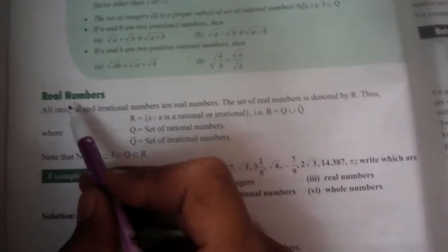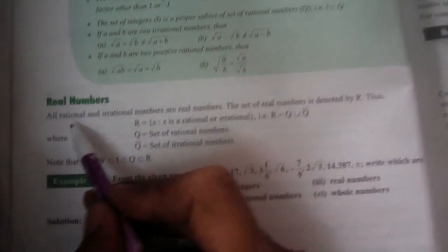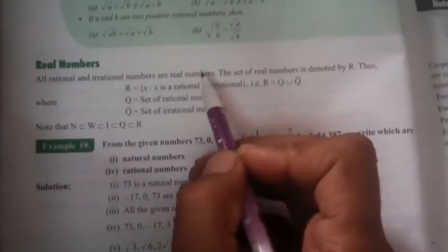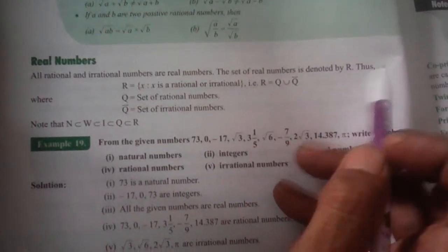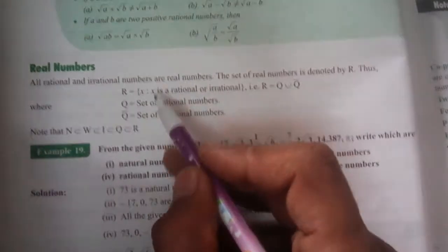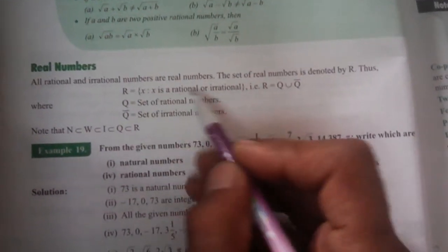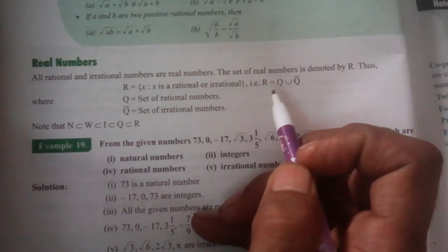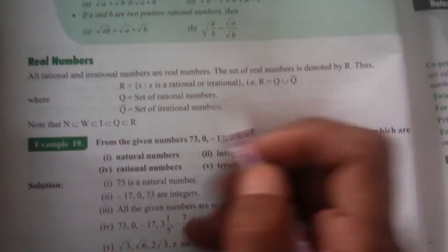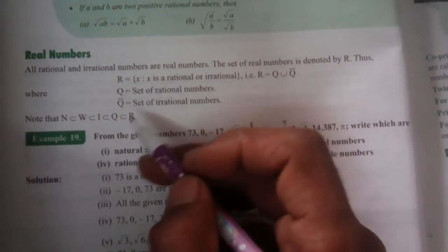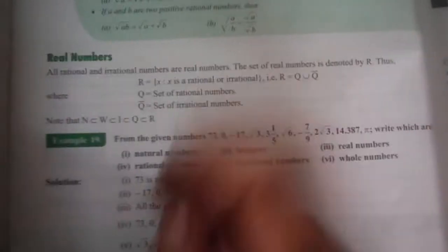Good morning students, today our topic is real numbers. All rational numbers and irrational numbers are real numbers. The set of real numbers is denoted by capital R. Thus R is {x : x is a rational or irrational}, R = Q ∪ Q̄, where Q is the set of rational numbers and Q̄ is the set of irrational numbers.